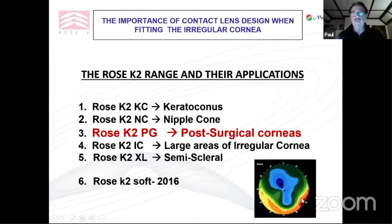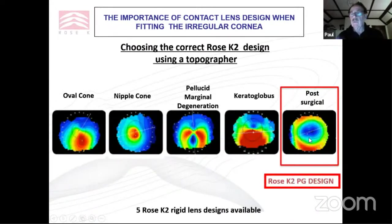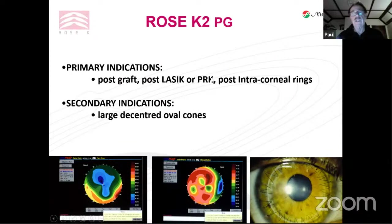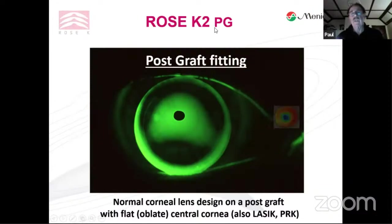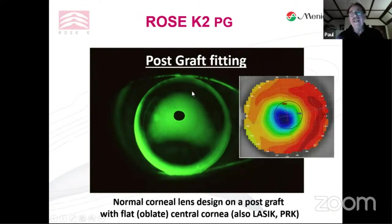Moving on to the post-graft design — post-surgical corneas are often oblate centrally, and they can look like this. A normal lens fitted over a post-graft shows a central oblate pull with bubbles, bearing on the edge of the graft — very typical when you try a regular design on a post-surgical cornea. The Rose K PG uses reverse geometry, which keeps the central part of the lens much flatter, with one steeper curve to get over the edge of the graft, and a higher edge lift — negating a lot of the central pulling over oblate areas. If you've got an oblate cornea, a regular design doesn't work; you need reverse geometry like the post-graft Rose K.